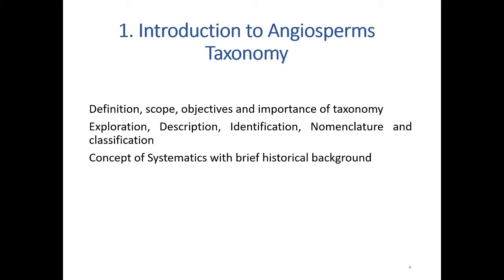Now let us start the first topic, Introduction to Angiosperm. In FYBSC we studied the outline classification of the plant kingdom. Under that there are two groups: Cryptogams and Phanerogams. Under Cryptogams we studied algae, fungi, bryophytes, pteridophytes, and lichens. The higher group is Phanerogams, also called Spermatophyta — sperma means seeds and phyton means plant. Under Spermatophyta there are two major groups: Angiosperm and Gymnosperm. Gymnosperm are the naked-seeded plants, and our topic is the higher group, Angiosperm.